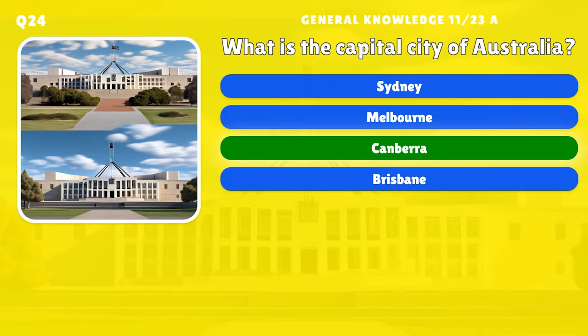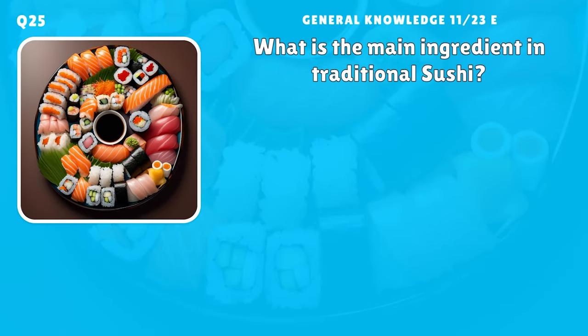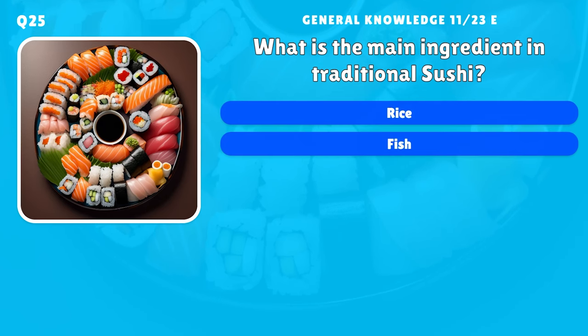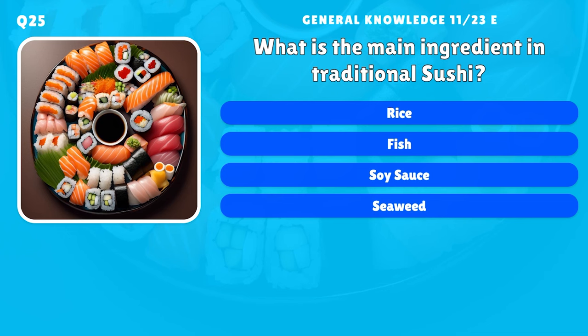What is the main ingredient in traditional sushi? A) Rice, B) Fish, C) Soy sauce, D) Seaweed.